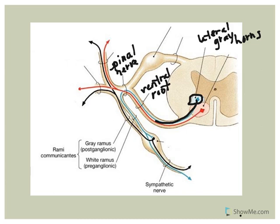The spinal nerve passes through the intervertebral foramen and exits through the ventral rami. Here is the ventral ramus.